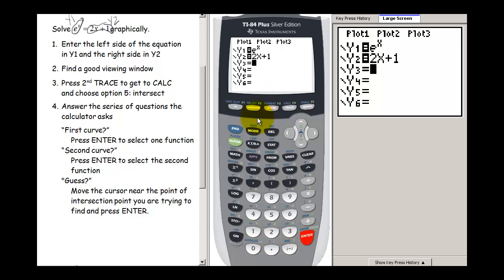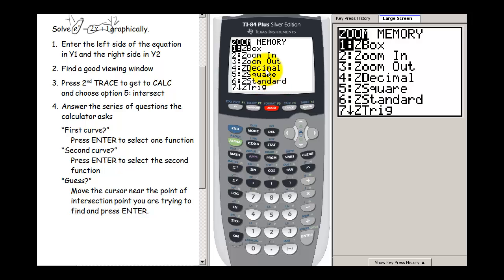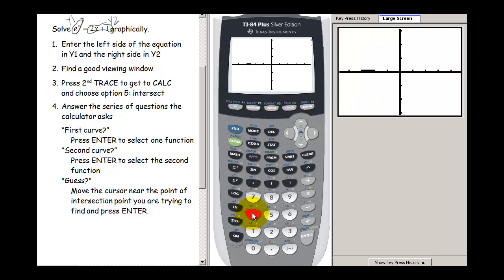By either using a preset or setting it manually. Let's use one of our preset windows. So let's try, my two favorite presets are standard and decimal. Let's try decimal this time. So let's go 4.